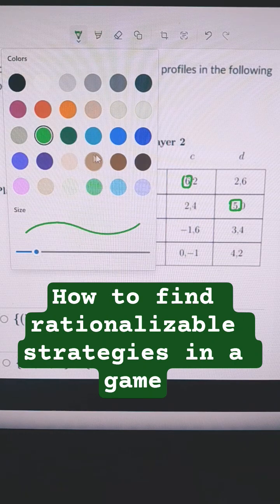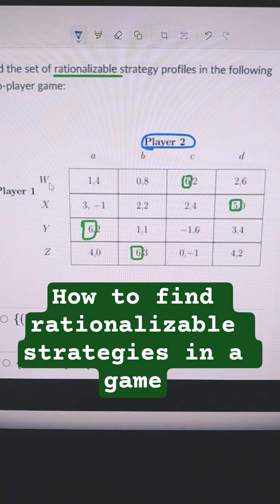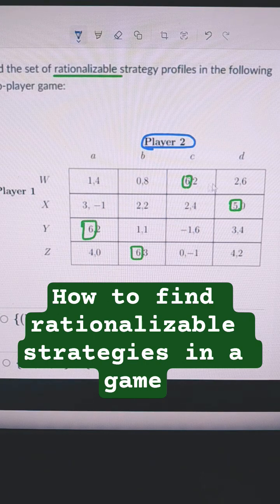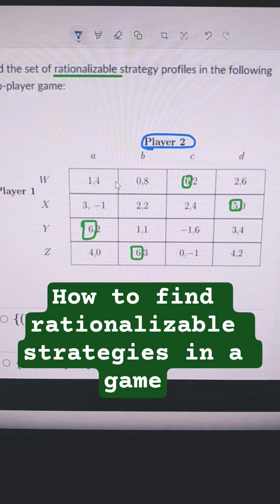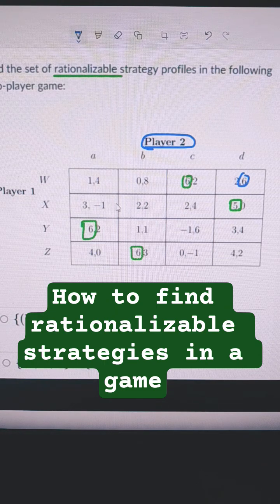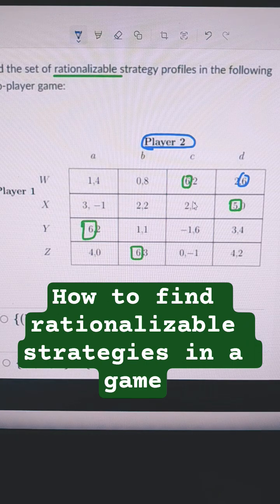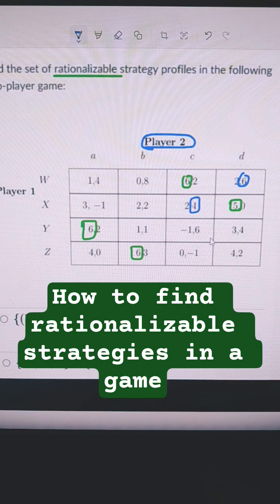For player two, I'm going to choose a different color here. We're going to go through that. If player one does W, we're now looking at the second number in each of these, and 6 is the biggest. So that would be strategy D. When player one does X, what's best for player two? That would be to get that 4.